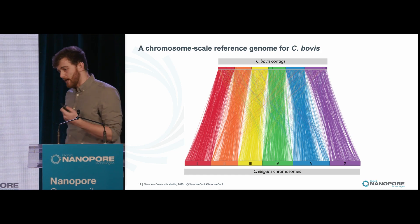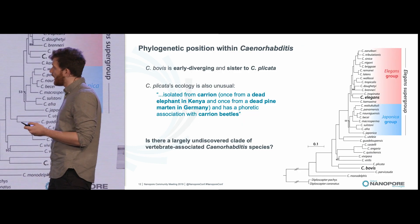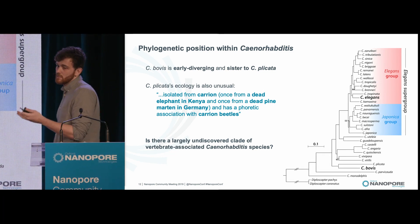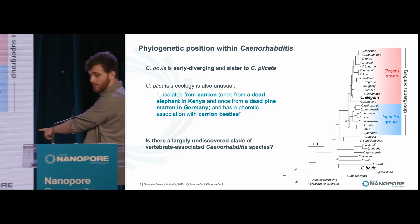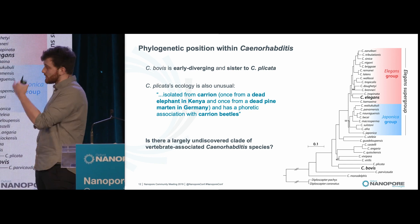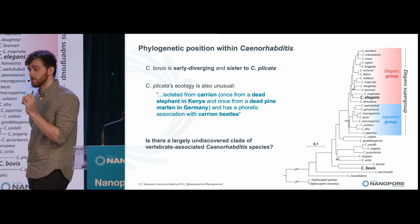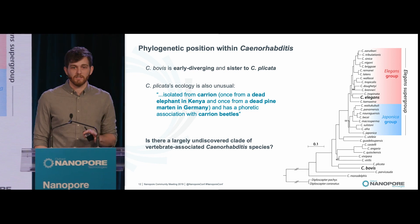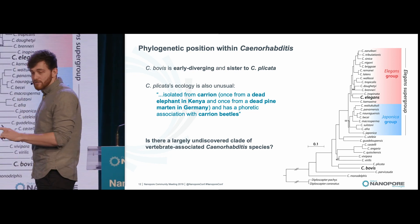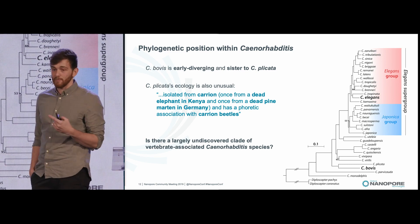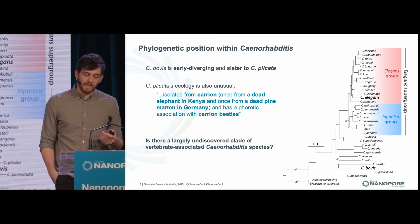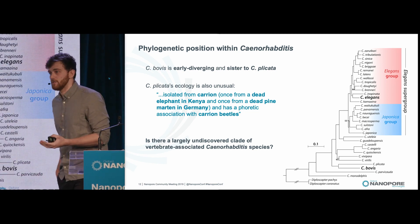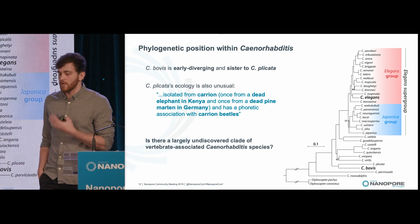With this genome we can now start to ask questions we had at the start of the project. One is how C. bovis relates to C. elegans and other species. Without going into the details, C. bovis is relatively early diverging in the genus — relatively distant from C. elegans — and is sister to a species called C. placata. This is interesting because C. placata is the only other species on this tree not isolated from rotting fruit or veg. Instead, it's been isolated once from a dead elephant in Kenya and once from a dead pine marten in Germany, and has an association with beetles that visit decaying animal carcasses. This leads us to hypothesize that there may well be a largely undiscovered clade of vertebrate-associated Caenorhabditis species — potentially lots more to sample and find.